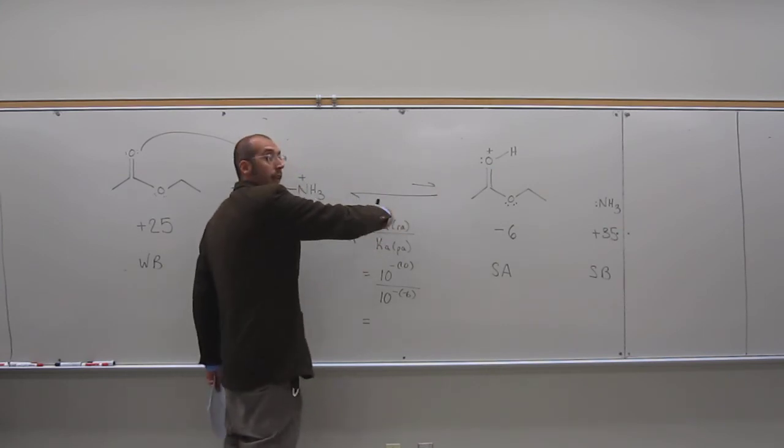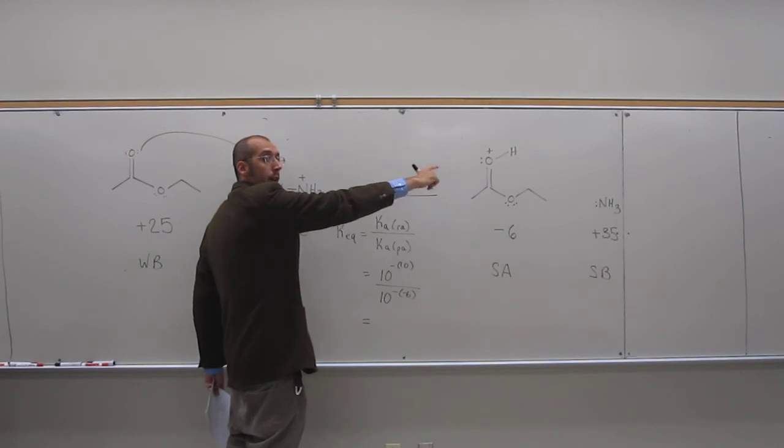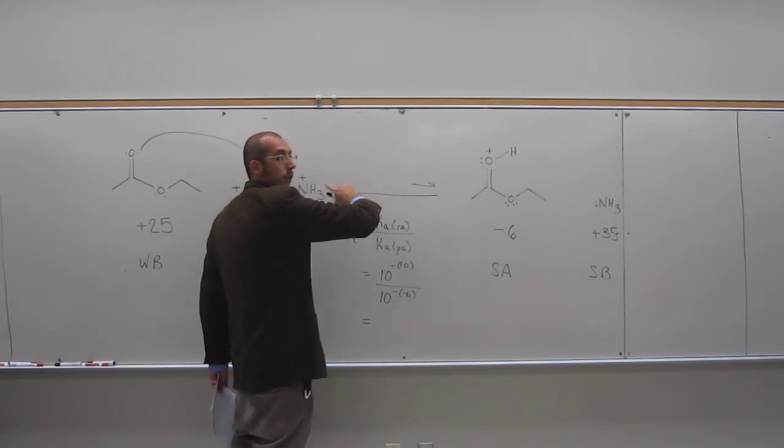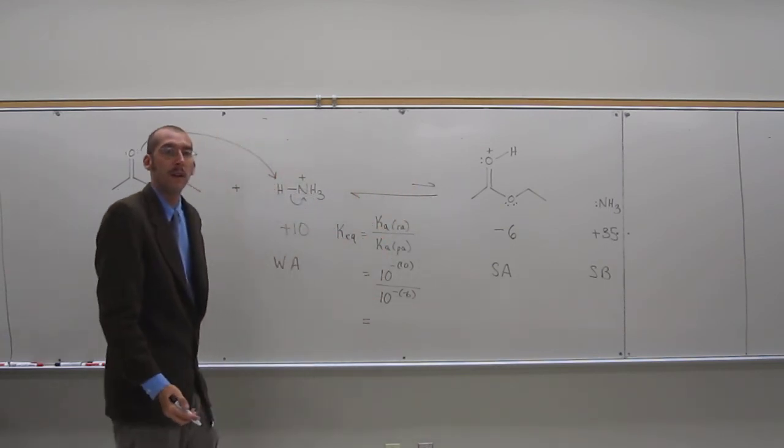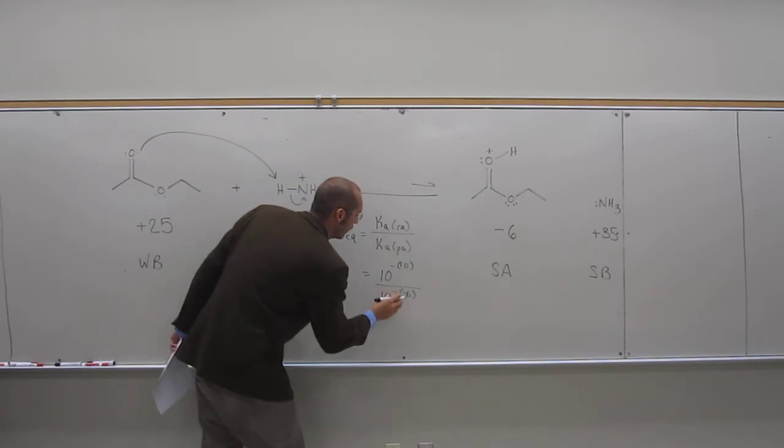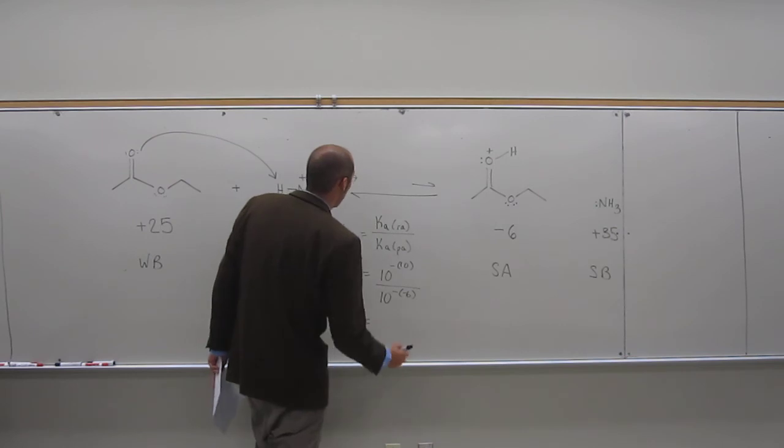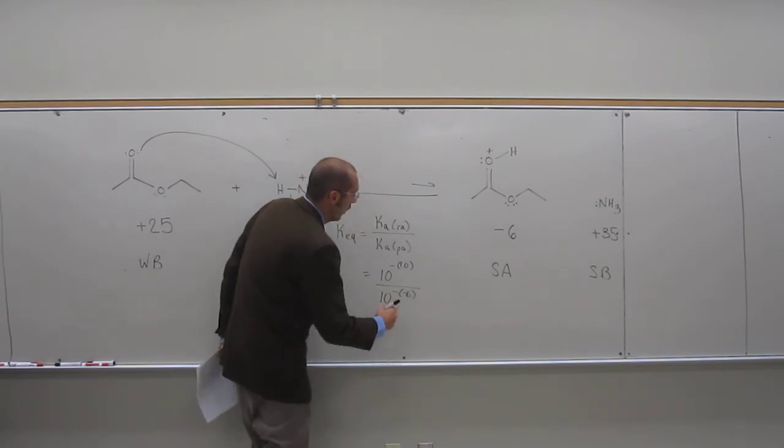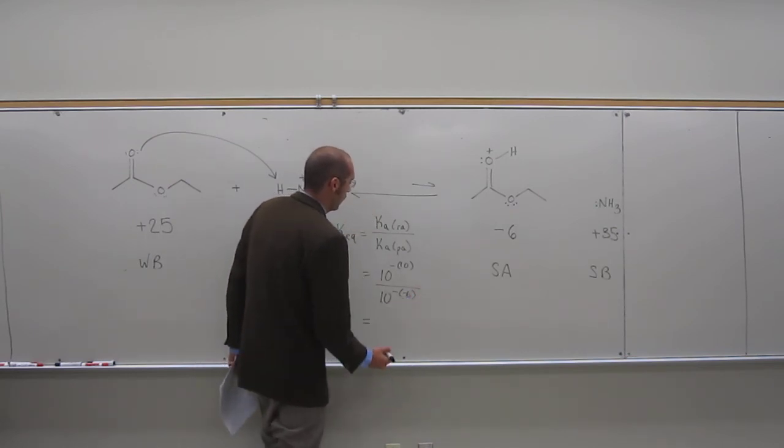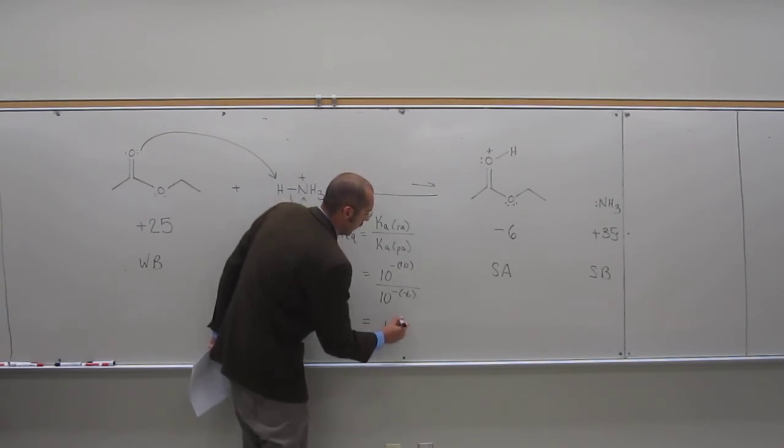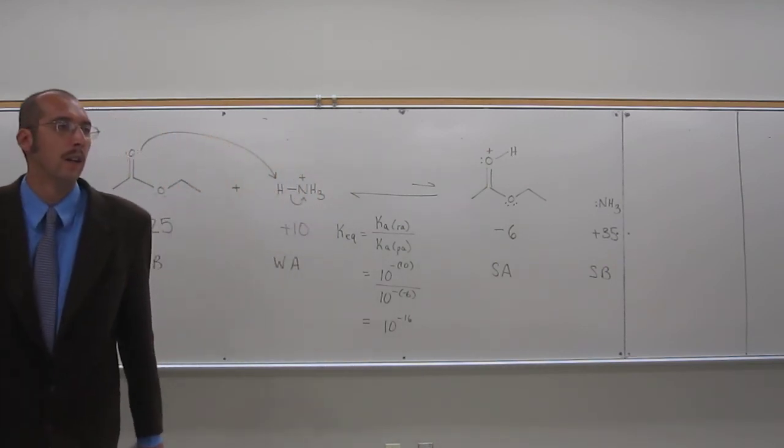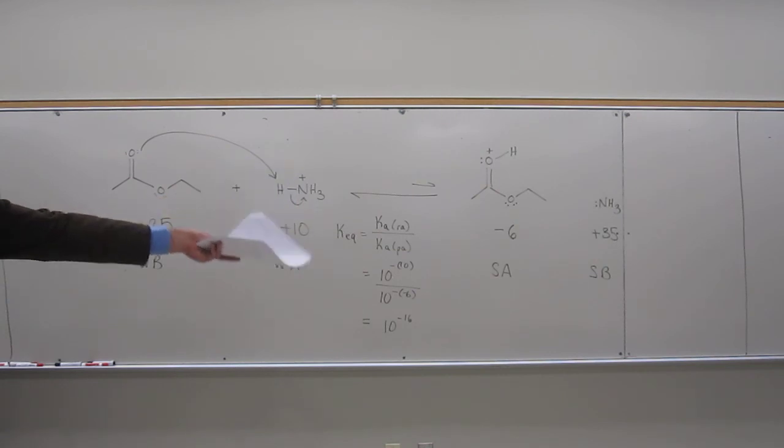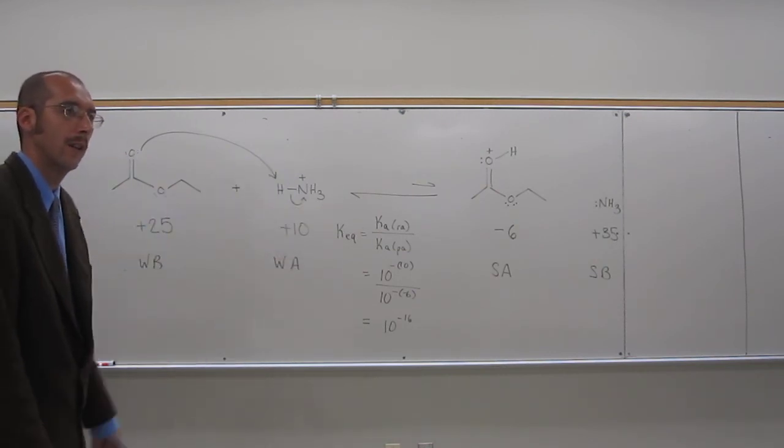The Keq should be what? Less than, greater than, equal to... What should it be? We're predicting this. Less than what? Less than 1. You have to look at the paper already to see that. You need to know this. You should have noticed that for a while. So less than 1. What is the Keq here? 1 times 10 to the negative 16. Yeah. So 1 times 10 to the negative 16. Is that less than 1? Does that go with our prediction? That the strong acid goes to the weak acid? Or the strong things go to the weak things? Right? Because those are more unstable.